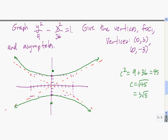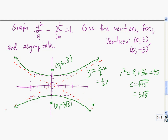So the coordinates of the lower focus are 0, negative 3 root 5. The last thing we need to do is find the equations of the asymptotes. To get the equations of the asymptotes, we have y equals the square root of the number under y squared, which is 3, divided by the square root of the number under x squared, which is 6, times x — so that equals one half x. The other asymptote is just the negative: y equals negative one half x. We always take the square root of the number under y divided by the square root of the number under x, times x.